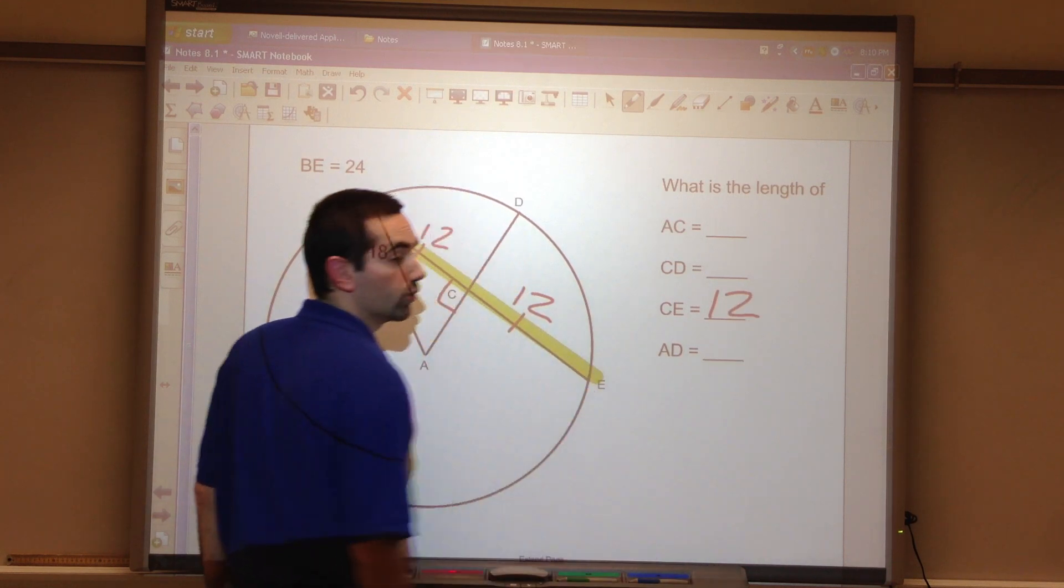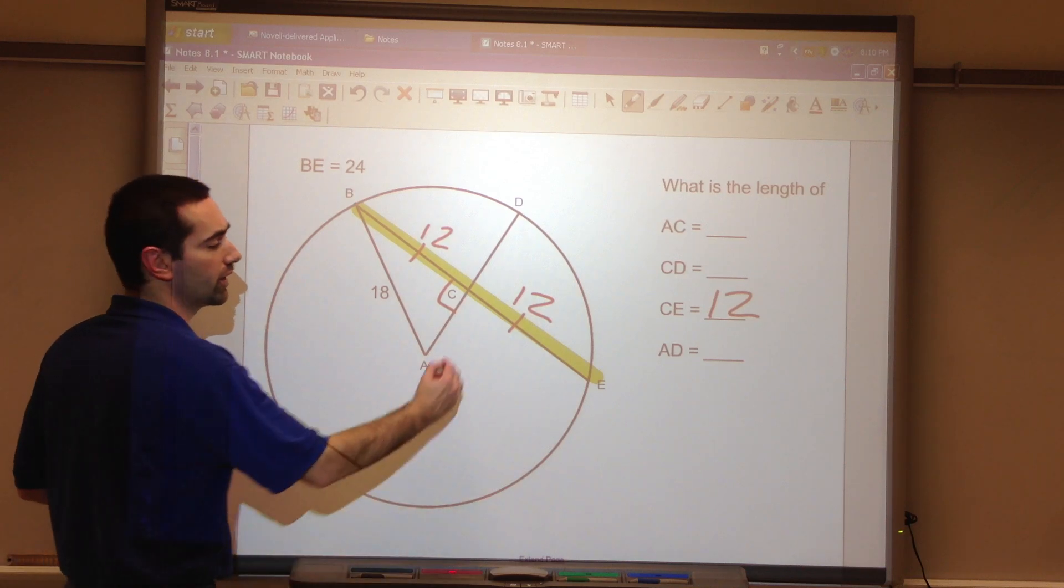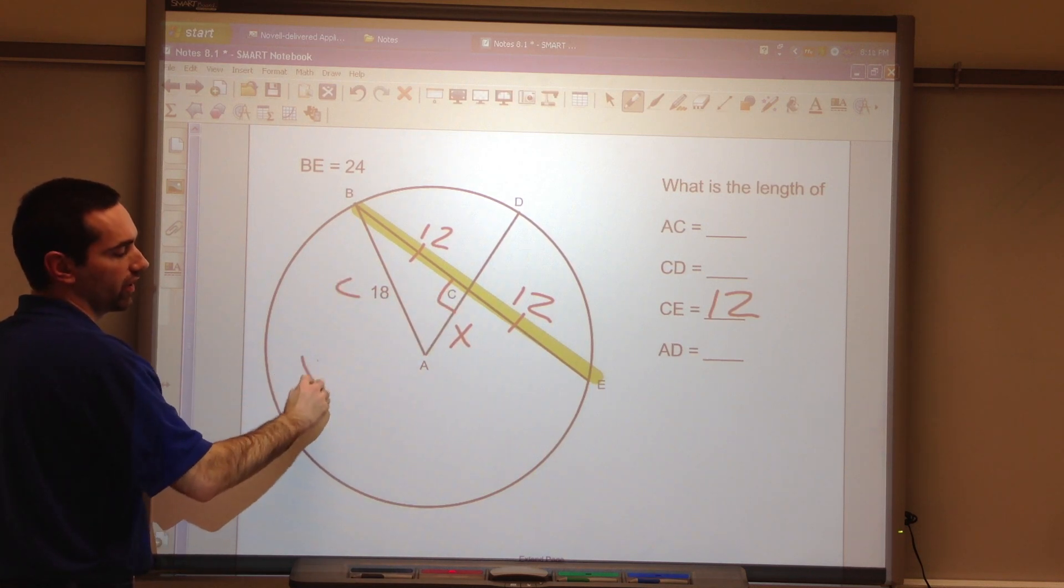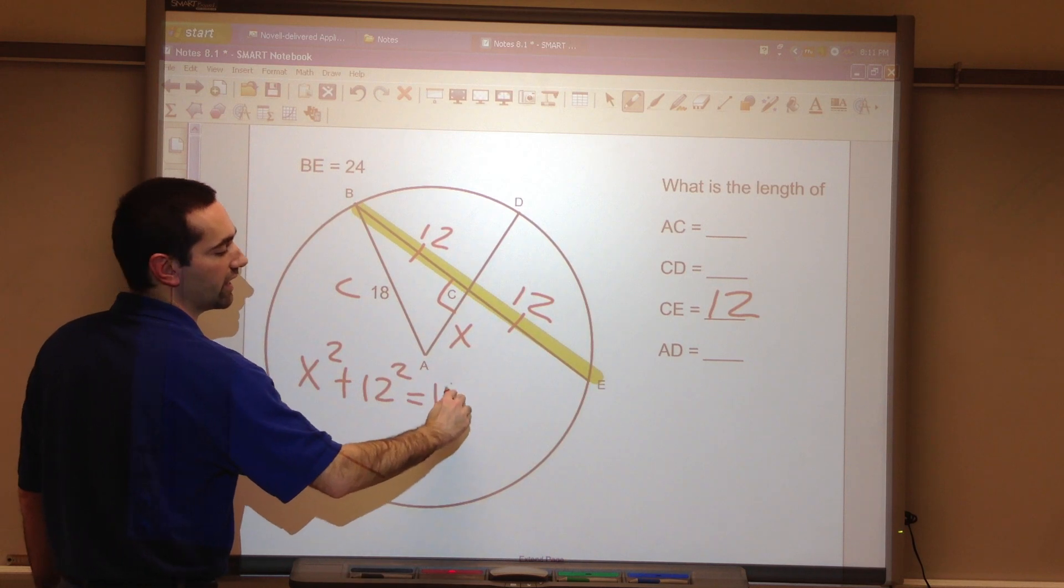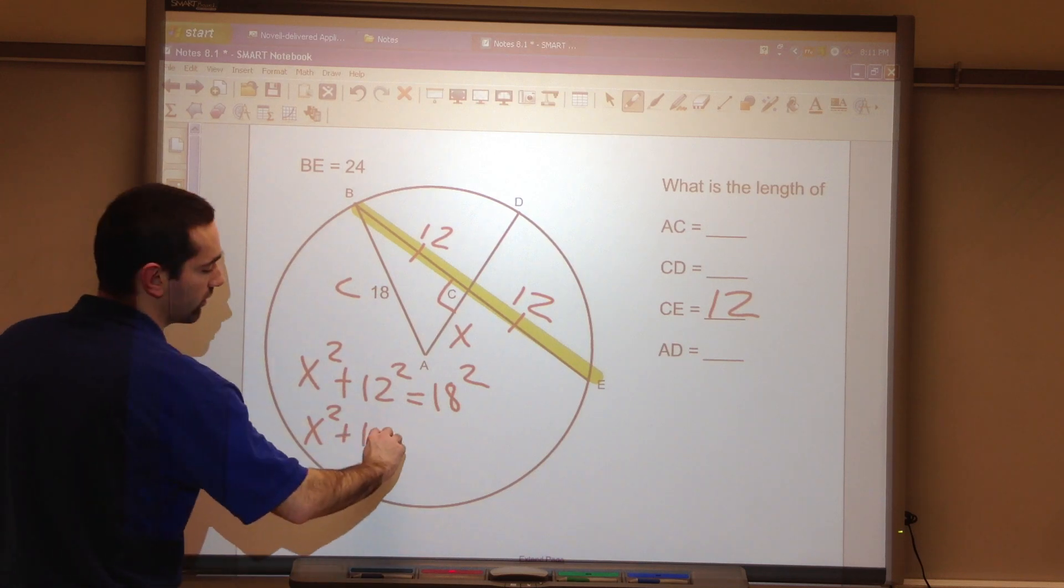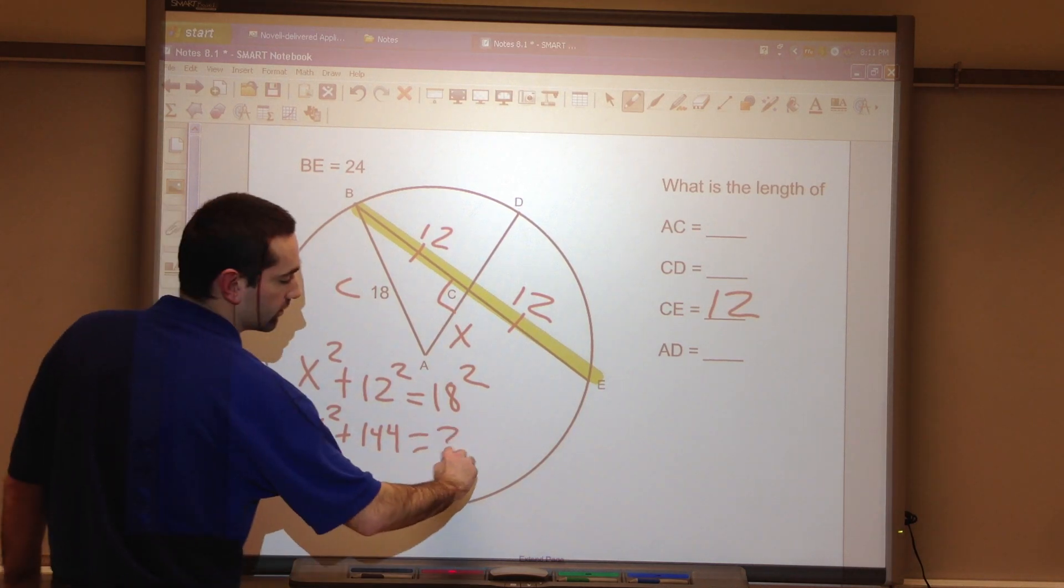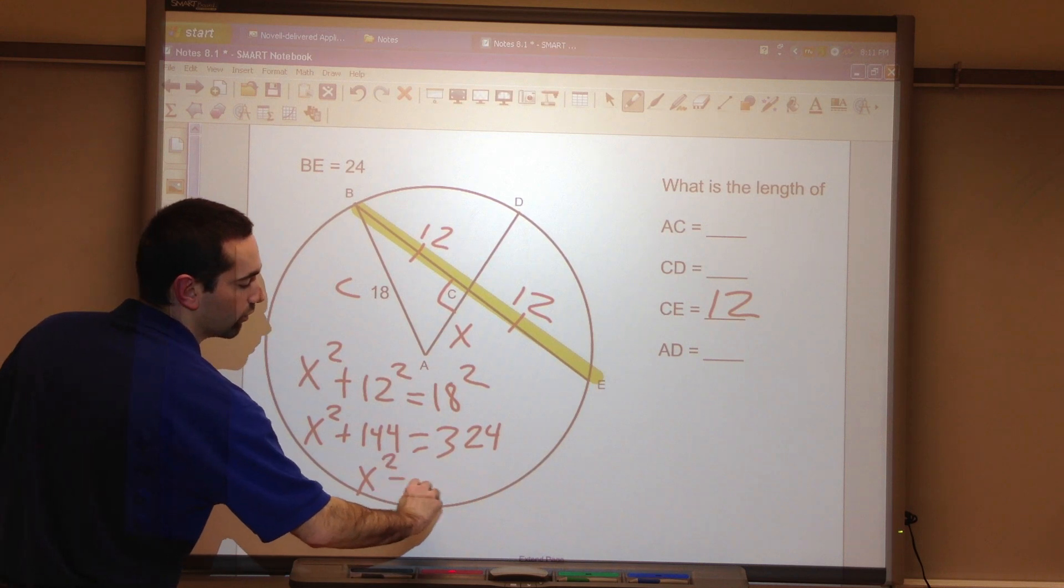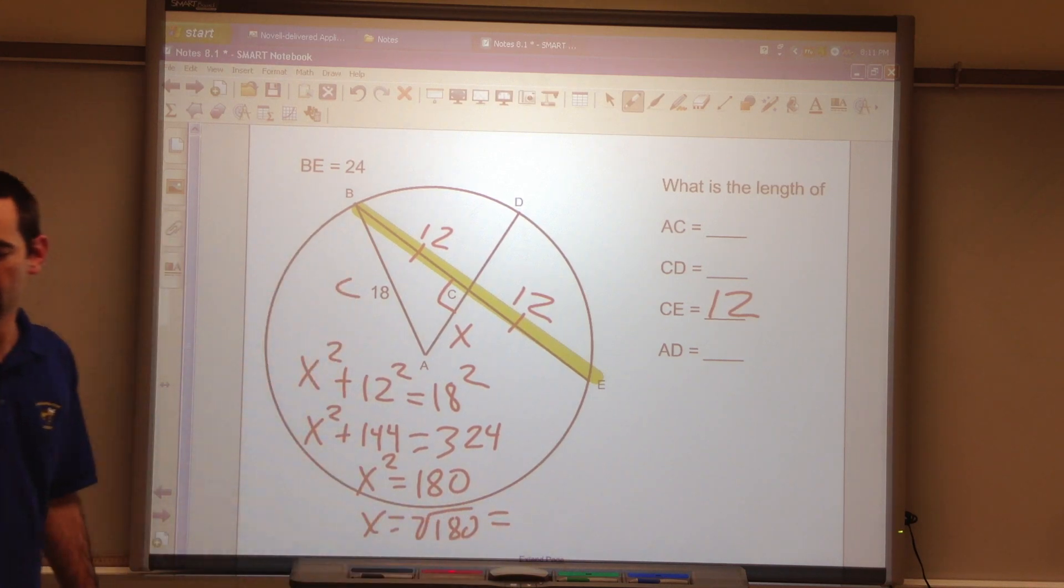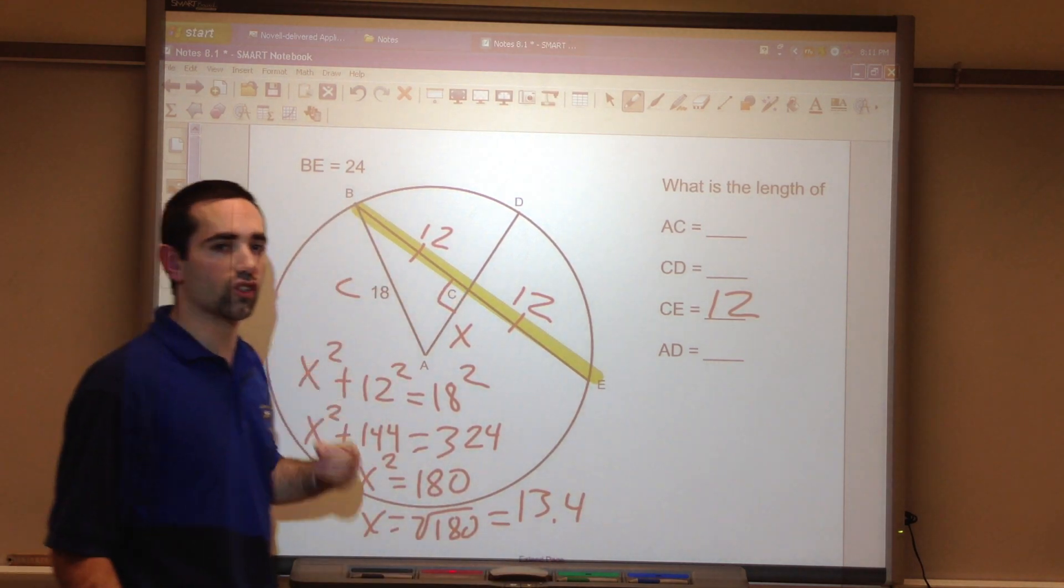So CE is 12. AB is 18. I don't know AC, I will use Pythagorean theorem. I'll call it X. This is C because it's crossing the hypotenuse. X squared plus 12 squared equals 18 squared. So X squared plus 12 squared is 144. 18 squared, we get 324. Subtract. X squared is 180. X equals square root of 180 is 13.4.